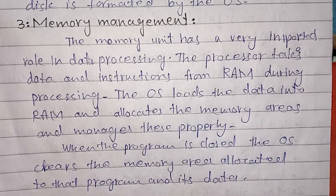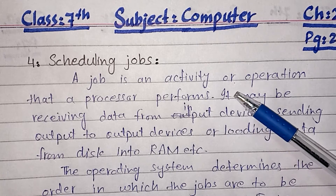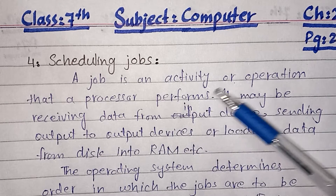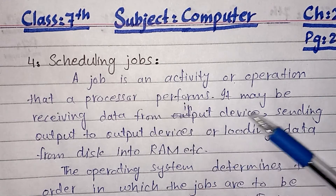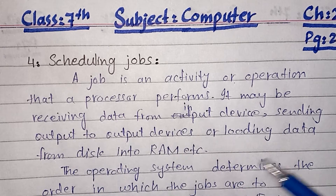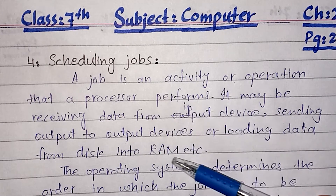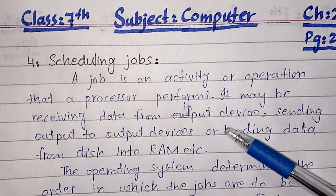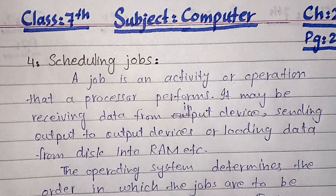Scheduling Job: A job is an activity or operation that the data processor performs. The processor needs to perform a job — it may be receiving data from input devices, sending data to output devices, or loading data into RAM. The operating system determines the order in which the jobs are to be performed.